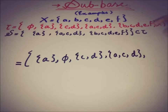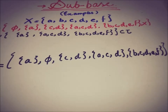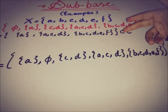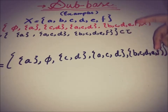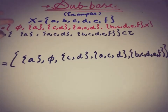Now we have to check whether this collection is a basis of tau or not. Recalling the definition of a basis: every open set, or every element of tau, can be written as a union of some basic open sets. So we compare the elements of topology tau with the set B_s formed by finite intersections.